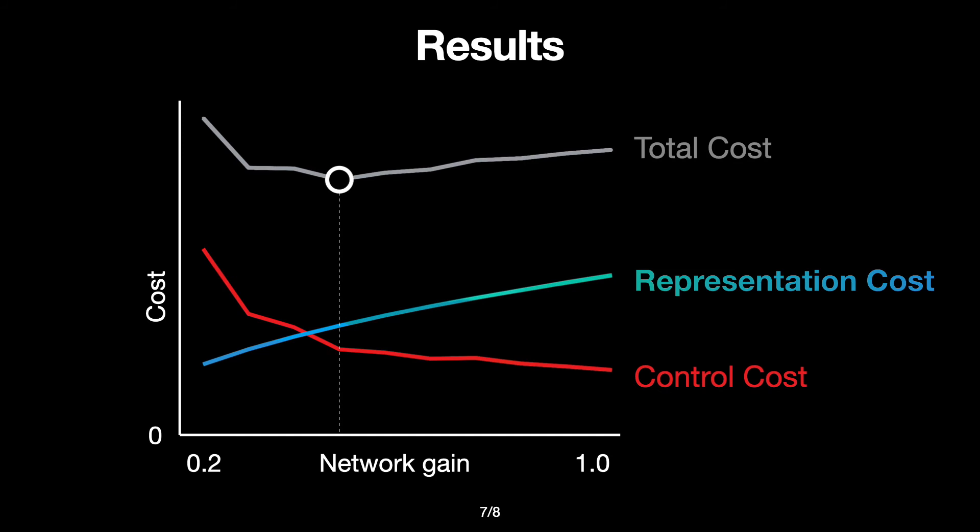Precise observations produce strong inferences that yield the best control performance, but these strong inferences are expensive to encode. This means that an agent can obtain more utility overall by sacrificing some task performance if doing so saves enough spikes.